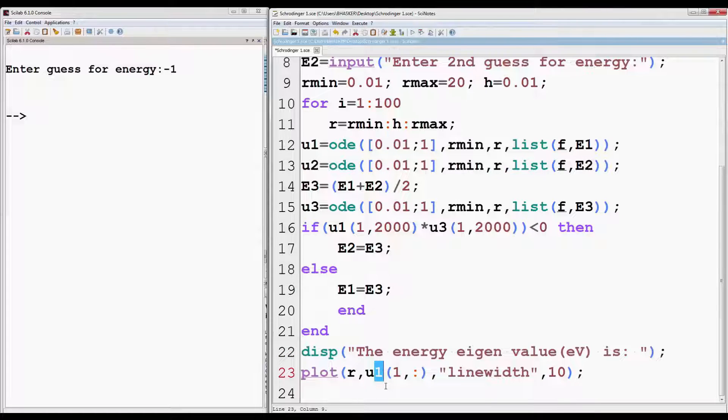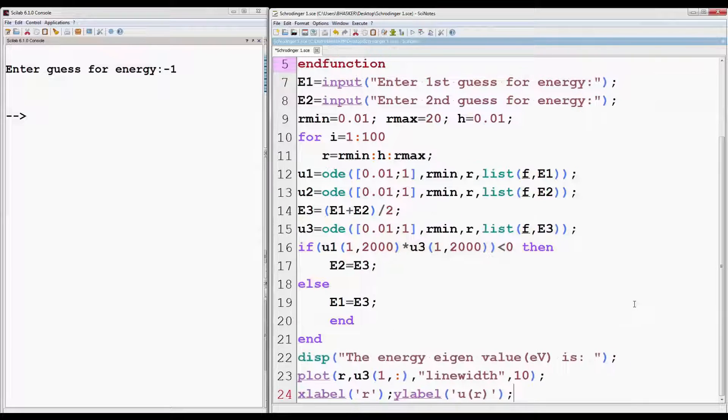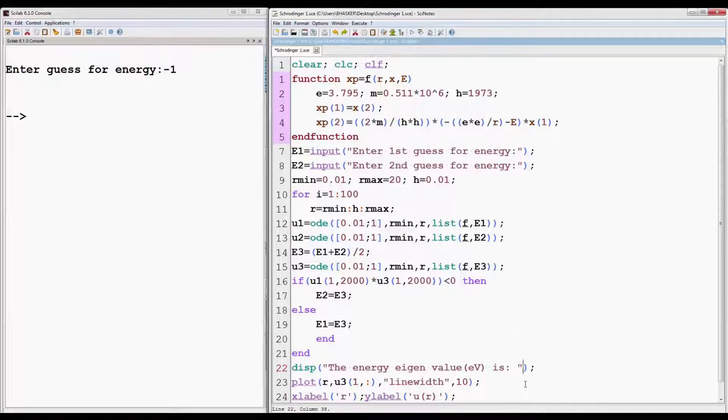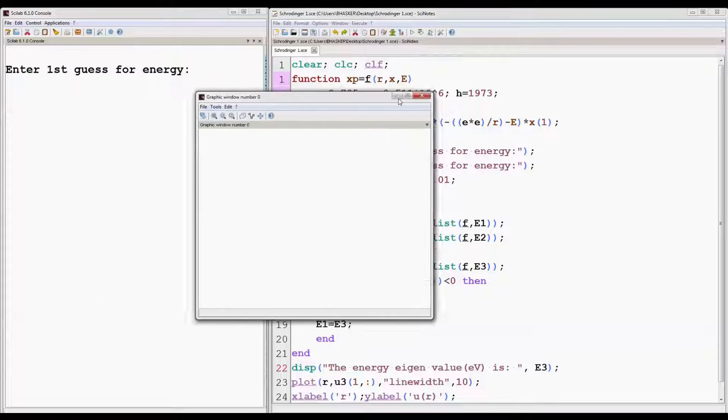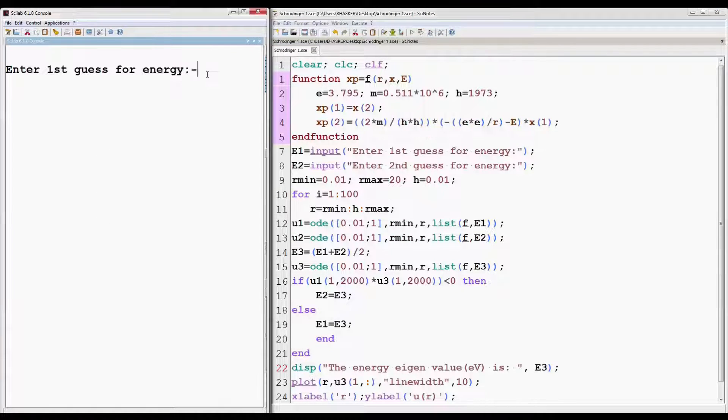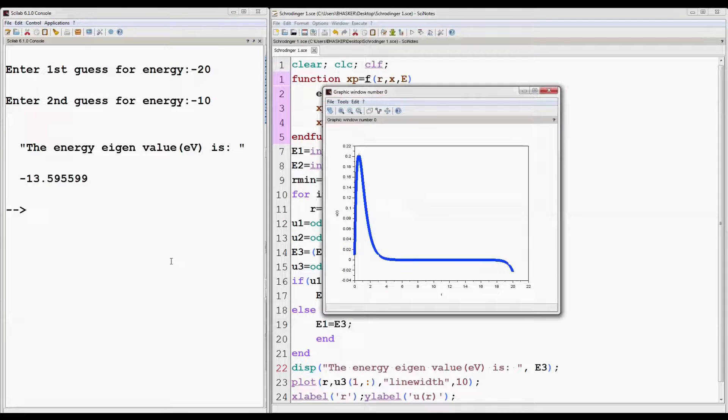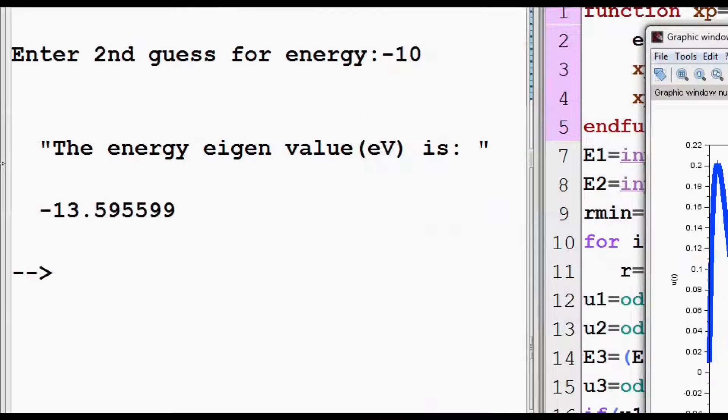Change U1 to U3 in plot. Also put labels to the figure. We forgot to display the value of E3 at line 22, so let's put it. Now run the program. Give first energy guess minus 20 and second guess minus 10 and press enter. Minus 20 to minus 10 is the range for ground state as evaluated earlier. So the energy of the ground state comes out to be minus 13.5959599.